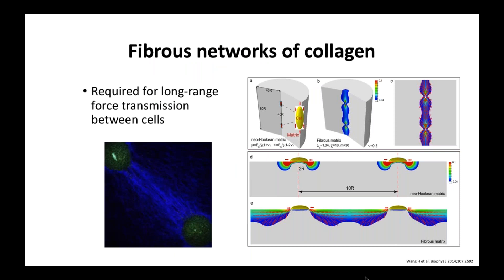One key feature of fibrillar collagen is that it forms fibrous networks. The fact that collagen fibrils are cross-linked allows them to form a network, and this network is very important for long-range force transmission between cells. Vivek Chinoy in our center has done a huge amount of work — this figure from one of his papers shows that cells can communicate over very long distances through the matrix, but what's required is that the matrix has formed a fibrous network. Cross-linking and network formation are very important in long-range cell communication in a tissue.